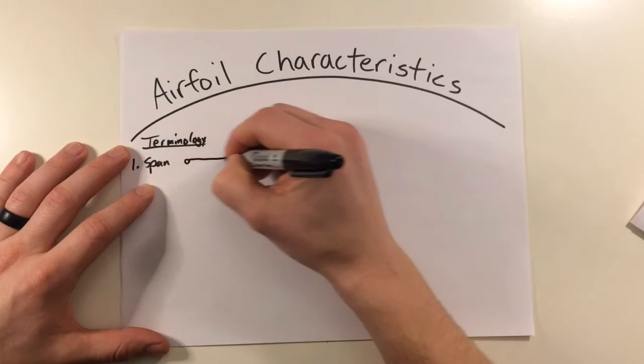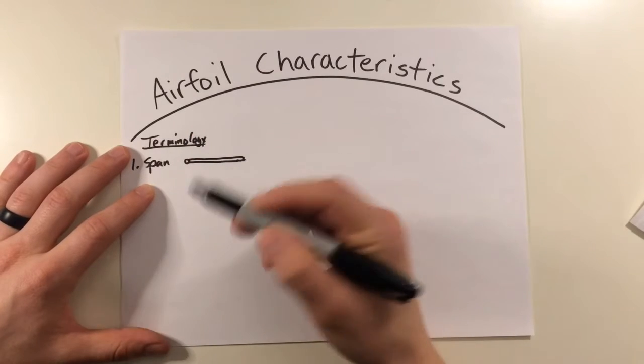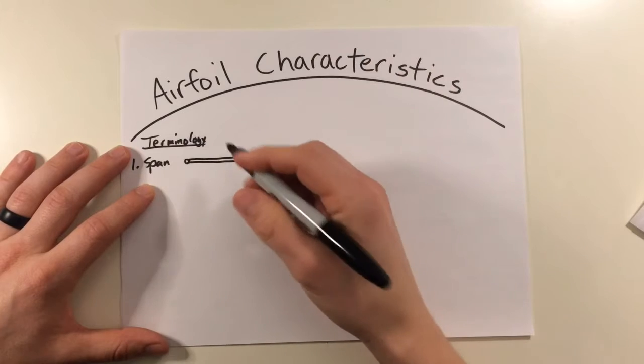the larger the area of the disc. So that's our hub, rotor blade coming out. The distance from here to here is going to be the span. As the span increases, you have the larger area of the disc.